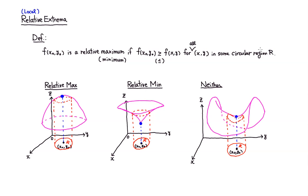And the minimum is easy to define too. It's very similar. The only difference is, it's a relative minimum if f(x₀, y₀) is less than or equal to anybody else around it. So if it's bigger than anybody else in the neighborhood, it's called the relative max. If it's smaller than or equal to anybody around the neighborhood, it's called the relative min.